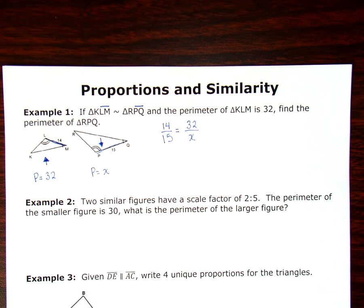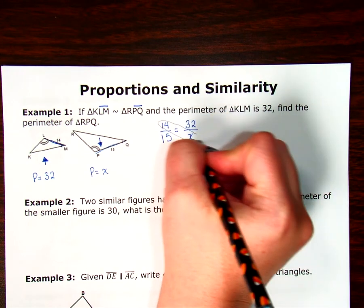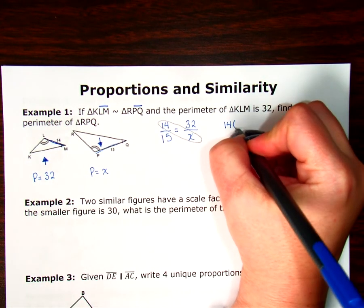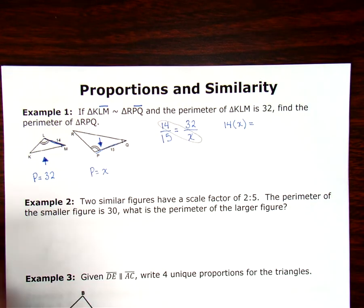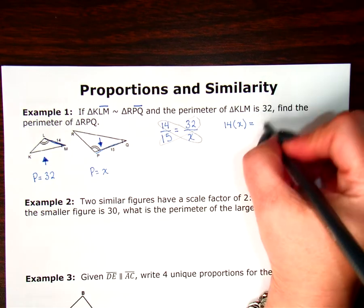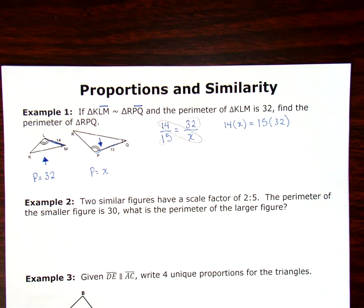There I have a proportion and that proportion can be cross-multiplied to solve. So I'm going to multiply 14 times X. And that's going to be equal to 15 times 32.